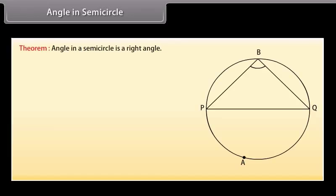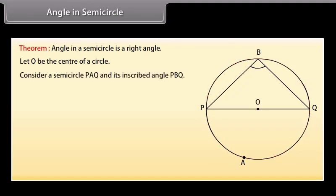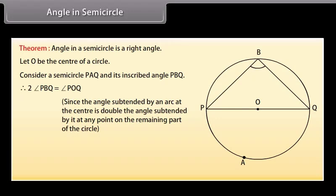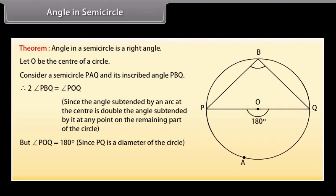Angle in a semicircle. Theorem: the angle in a semicircle is a right angle. Let O be the center of a circle. Consider a semicircle PAQ and its inscribed angle PBQ. Since the angle subtended by an arc at the center is double the angle subtended at any point on the remaining part, 2·angle PBQ equals angle POQ. But angle POQ is 180 degrees because PQ is a diameter. Therefore, 2·angle PBQ equals 180 degrees, so angle PBQ equals 90 degrees.